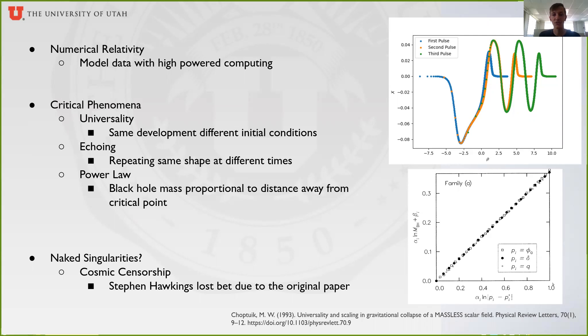The second is echoing, shown in the top right, where the field actually repeats the same shape as it progresses towards the critical parameter. There are three colors shown: blue is the earliest profile, orange is later, and green is the latest.